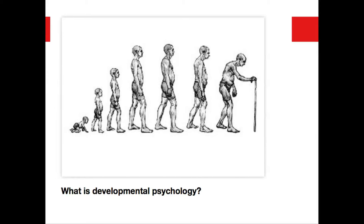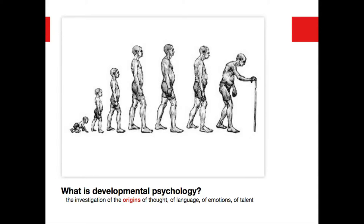So what is developmental psychology? It's different from other types of psychology because it's not a content area. It's not just about cognition, it's not just about the social world — it allows us to look at all of these things, but we have to study them across time, how they develop. So it's the study of change over time. It's the investigation of the origins of thought, of language, of emotions, of talent — anything that makes us unique as humans.